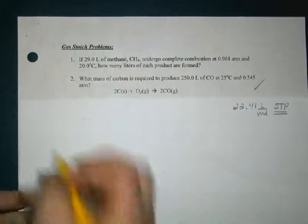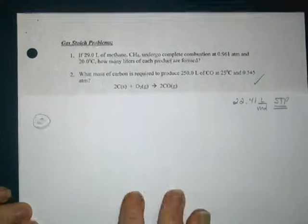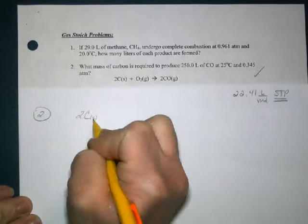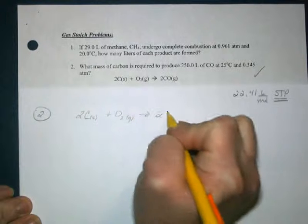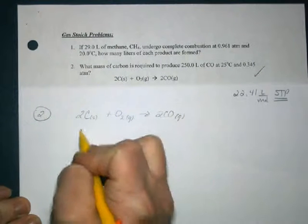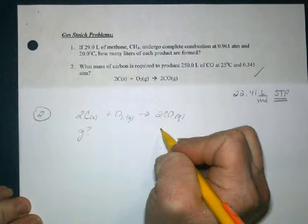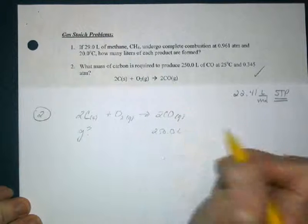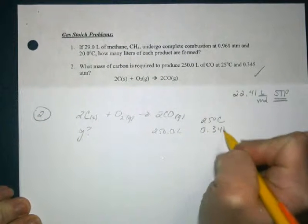The first thing we are provided is the balanced equation. So we have carbon solid reacting with oxygen to create carbon monoxide. The question is: what mass of carbon is required to produce 250 liters of carbon monoxide at 25 Celsius and 0.345 atm?